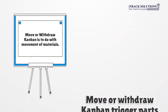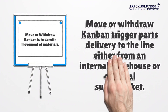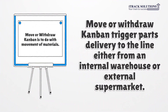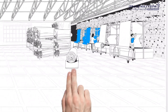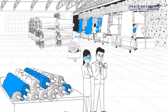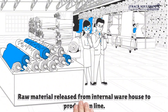Move or withdraw Kanban is to do with movement of materials. Move or withdraw Kanban triggers parts delivery to the line either from an internal warehouse or external supermarket. In this example, based on the move or withdraw Kanban card, a particular color, type and quantity of fabric is released from the internal warehouse to the production line.